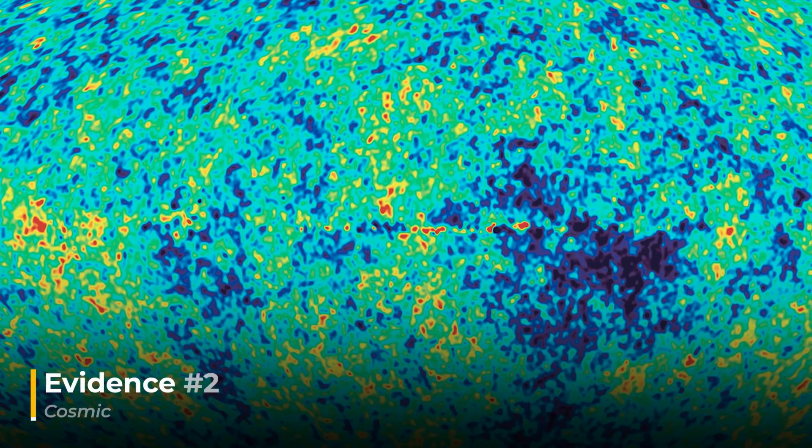Then, in the 1990s, measurements of the cosmic microwave background, the afterglow of the Big Bang, and the large-scale structure of the universe showed that the universe is much more clumpy and filamentous than it would be if it were made up of only visible matter.